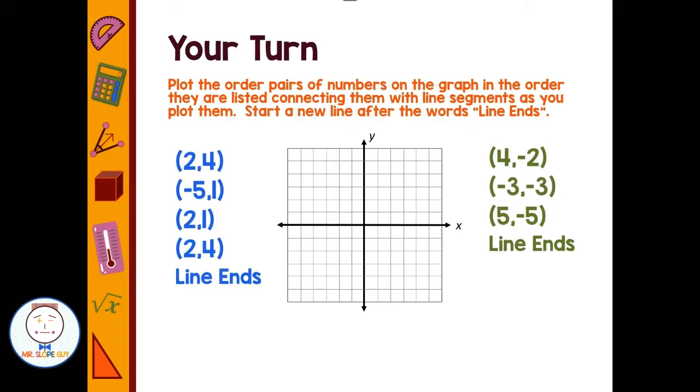All right, so we have a point at (2, 4). So that's right 2, up 4. Then we have the point (-5, 1). Starting at the origin I go left 5, up 1. And then I'm going to make a line connecting these two points because I'm going to connect as I go. Then I'm going to add my next point at (2, 1), then I'm going to connect as I go.